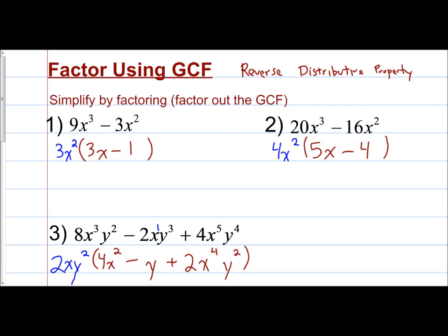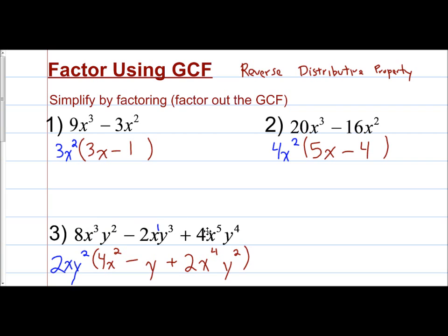Notice when you're factoring out a GCF, if you start with a binomial — two terms — inside the parentheses you're still going to have two terms. If you have three terms, inside the parentheses you'll have three terms. When you factor out the GCF, the inside of the parentheses will always have the same number of terms as the original expression. The reason why is because you're doing the reverse of the distributive property — if you distribute back in, you should get the original result.